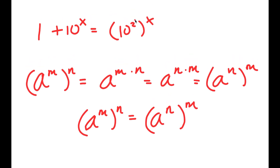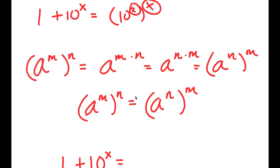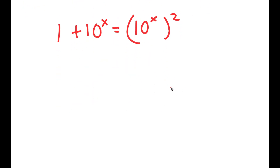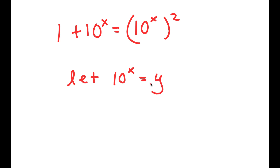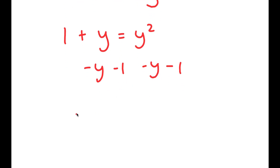So for 10 to the power of 2 to the power of x, I can switch the values of 2 and x, so now I get 1 plus 10 to the power of x is equal to 10 to the power of x to the power of 2. From here, I'm going to let 10 to the power of x equal to the variable y. So if I substitute in y for 10 to the power of x, I get 1 plus y is equal to y squared. Now I'm going to subtract y and 1 on both sides, so I get y squared minus y minus 1 is equal to 0.